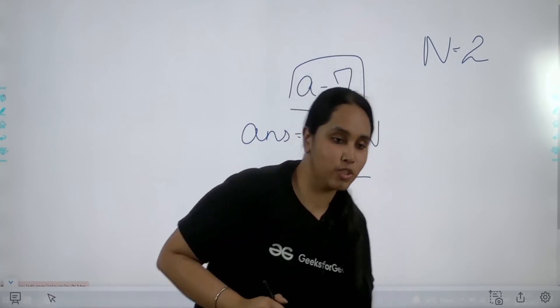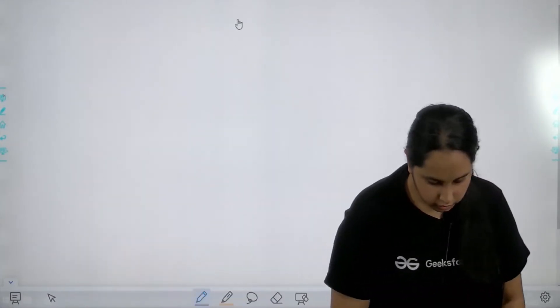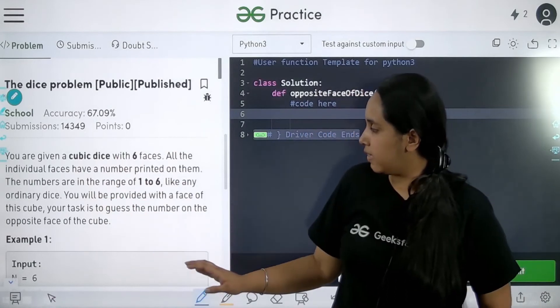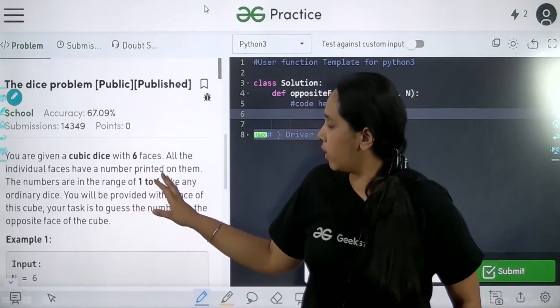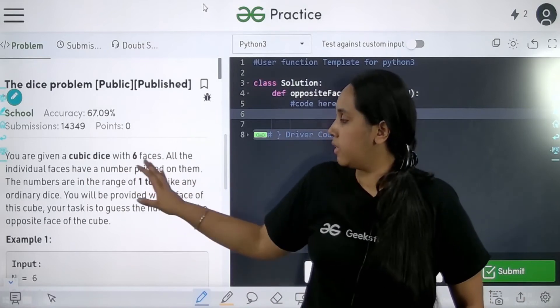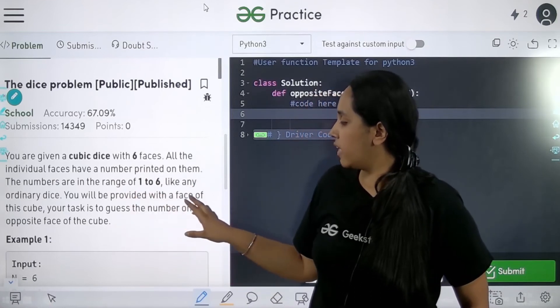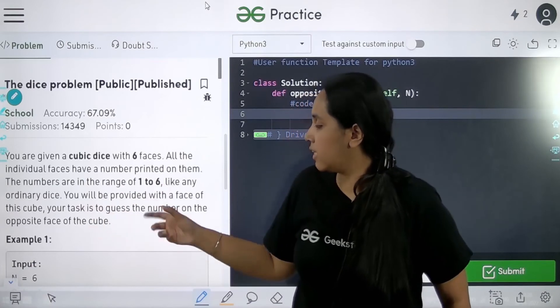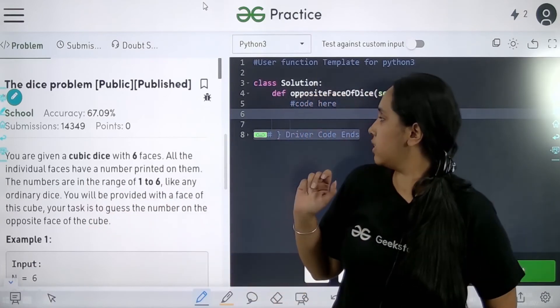So now let us do that, first let me clean the screen. Now guys, this is the problem: you are given a cubic dice with 6 faces, all the individual faces have numbers printed on them. The numbers are between 1 to 6 like any ordinary dice. You will be provided with the face, that is the value of n, of this cube. Your task is to guess the number on the opposite side. So this is our problem.